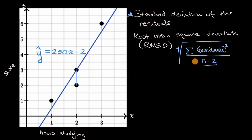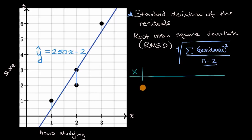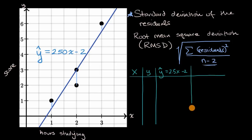Let's actually calculate it by hand to see how things play out. I'm going to set up a little table. The columns will be: our x value, our y value, ŷ hat which equals 2.5x minus two, and the residual squared, which is (y minus ŷ)². Then we'll sum them all up, divide by n minus two, and take the square root.